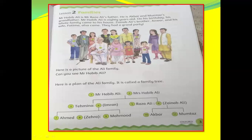Now you can see in this picture — this is one family. In this picture you can see three generations: grandfather, father, mother, son, and grandson. This is Mr. Habib Ali's family. You can see here an old man and old woman, number one and number two, sitting on the chairs. Number one is Mr. Habib Ali and number two is Mrs. Habib Ali — the wife of Mr. Habib Ali. These two are grandfather and grandmother.